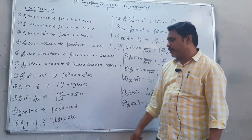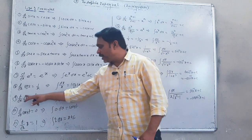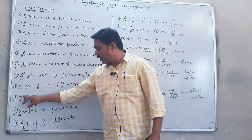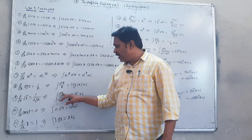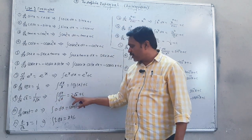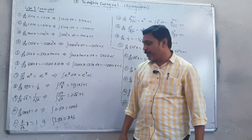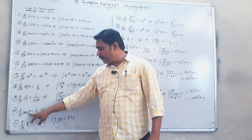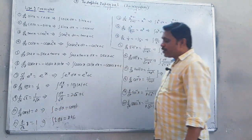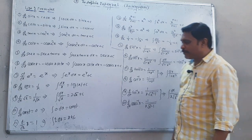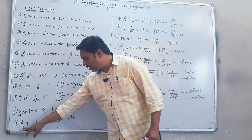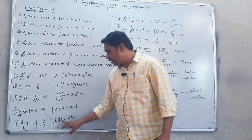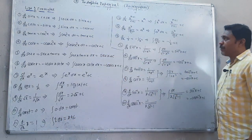Derivative of log x equals 1 upon x, so integral of dx upon x equals log of mod x plus c. Derivative of root x equals 1 upon 2 root x, so integral of dx upon root x equals 2 root x plus c. Derivative of a constant is 0, so integral of 0 equals constant. Derivative of x equals 1, so integral of 1 dx equals x plus c.